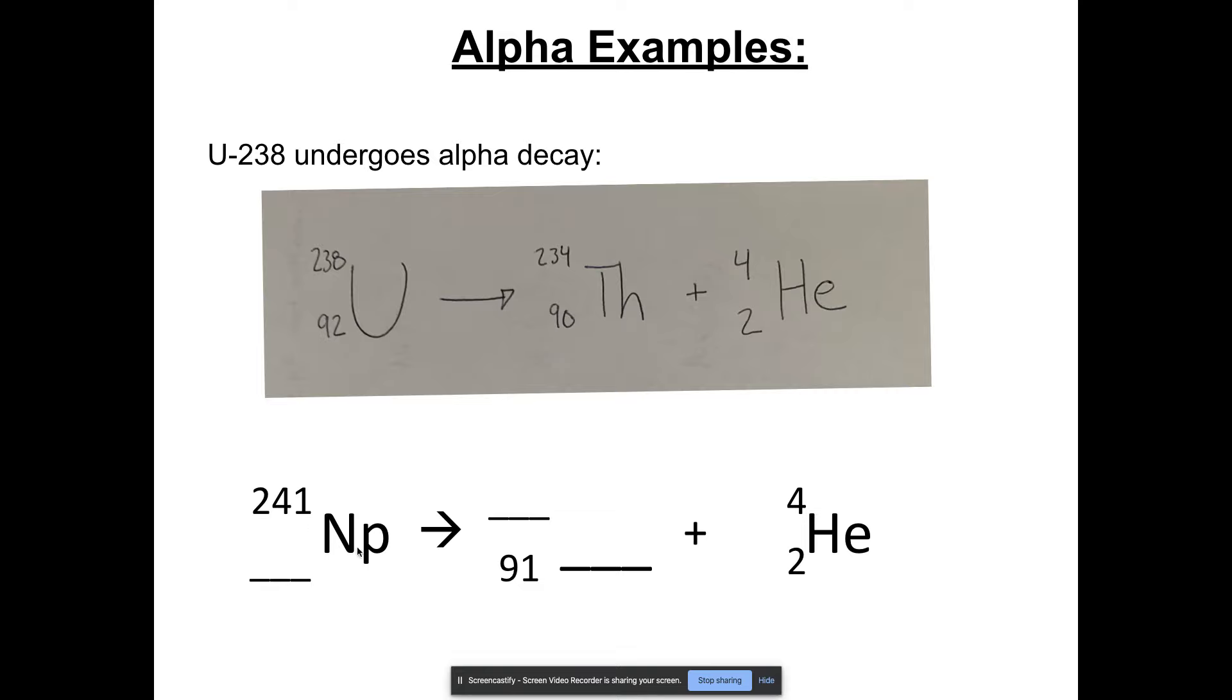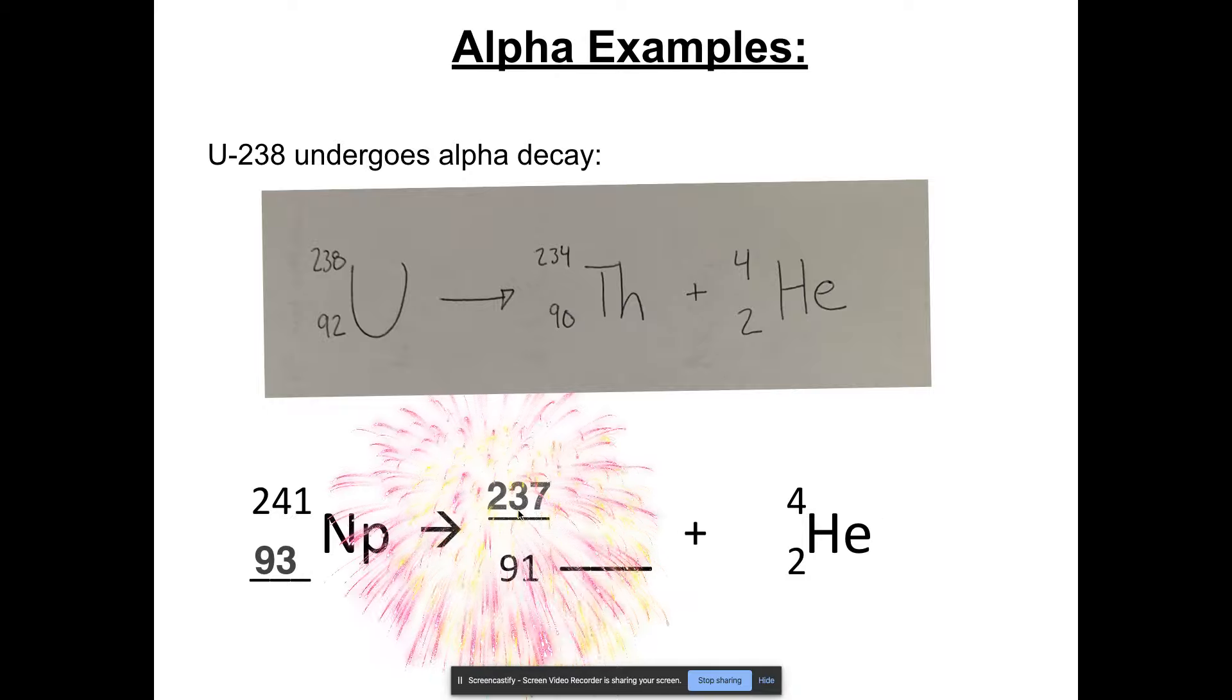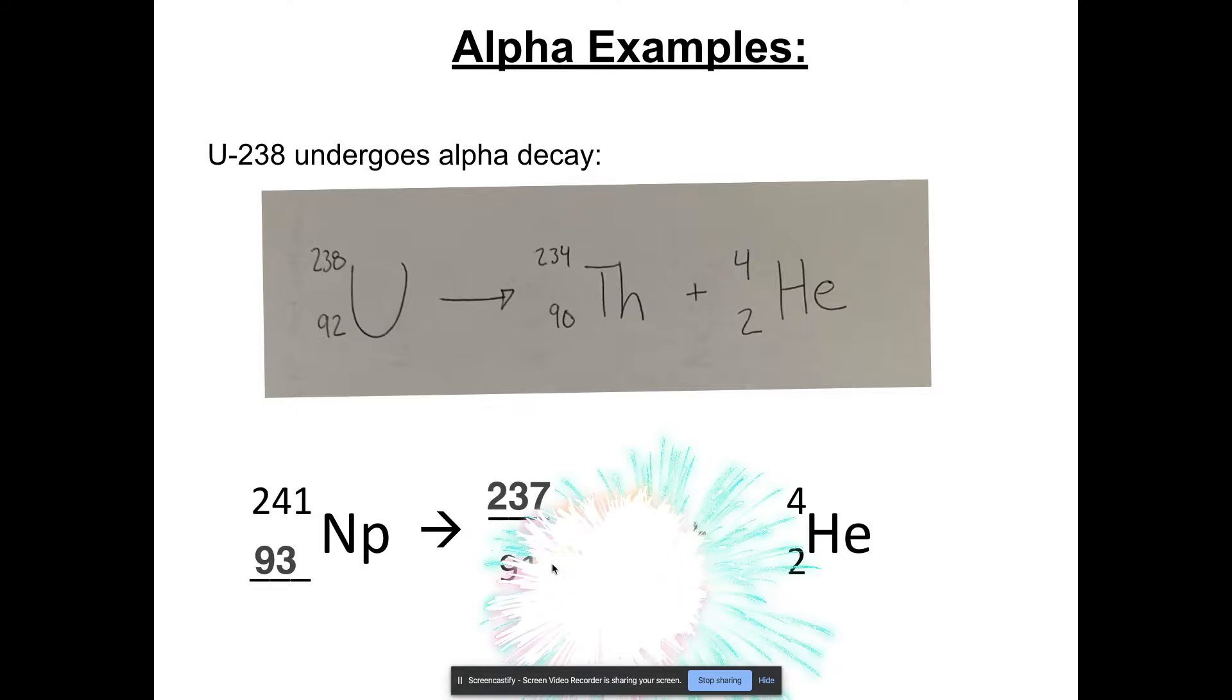All right, let's fill in these blanks. So we have neptunium-241, so let's fill in this blank first. Find your neptunium on your periodic table. It's number 93. Next, let's see if we can fill this top row in. So 241 equals something plus 4, I can fill that in. 237 plus 4 is 241. And then number 91 on the periodic table is proactinium, so that would be P-A. That's alpha decay.